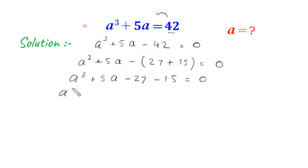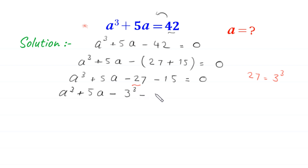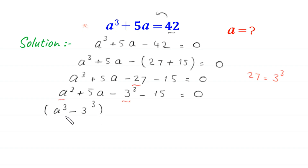Next, a cubed plus 5 times a minus 27, where 27 is the same as 3 cubed. So we write this 27 as 3 cubed, giving us a cubed minus 3 cubed plus 5 times a minus 15 is equal to 0.